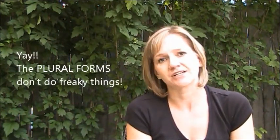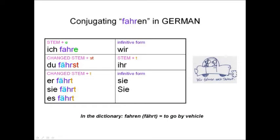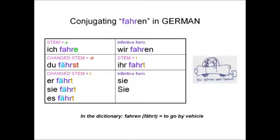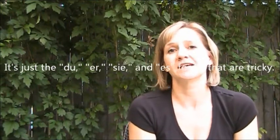In strong verbs, the plural forms are always conjugated regularly — there's never anything tricky in the plural forms, which is a total relief. For the wir form, we use the infinitive — wir fahren. For the ihr form, we use the stem plus a T — ihr fahrt. And then our plural forms: sie and sie fahren. It's the du and the er, sie, and es forms where you have to pay attention in the strong verbs when it comes to conjugating.